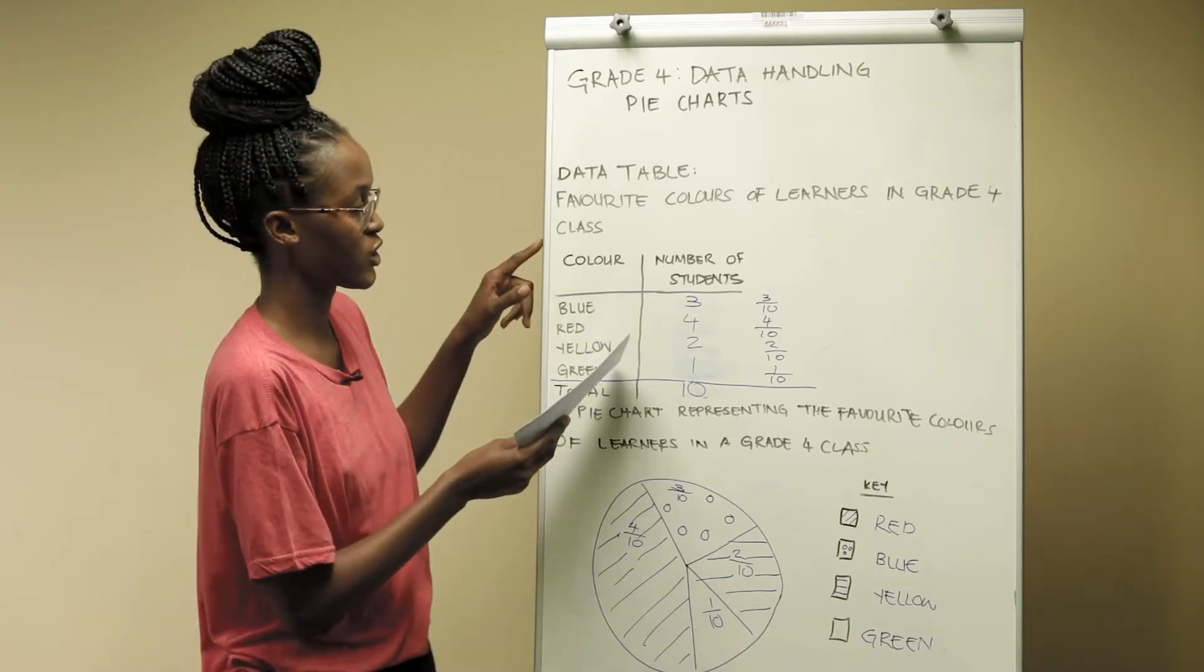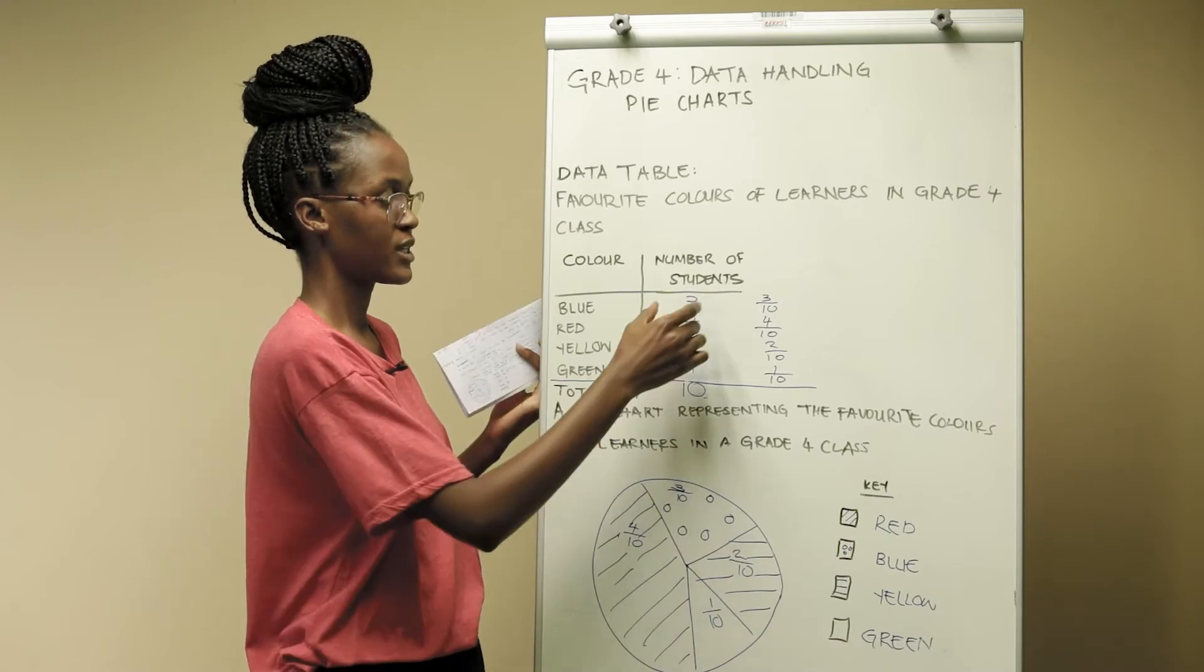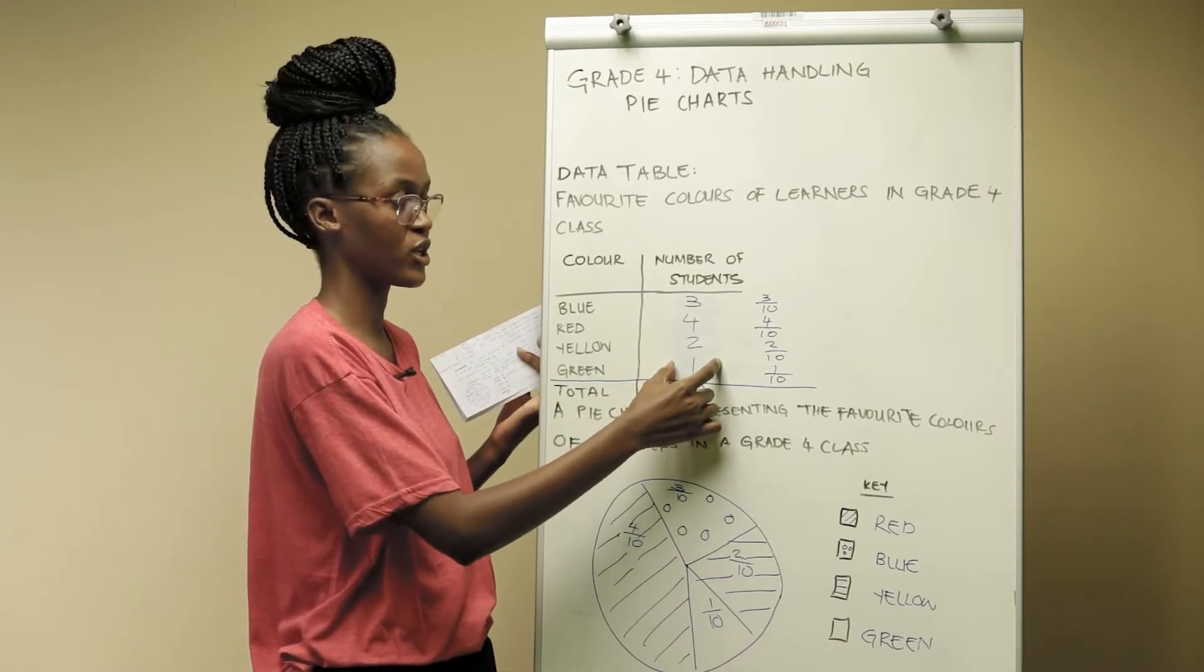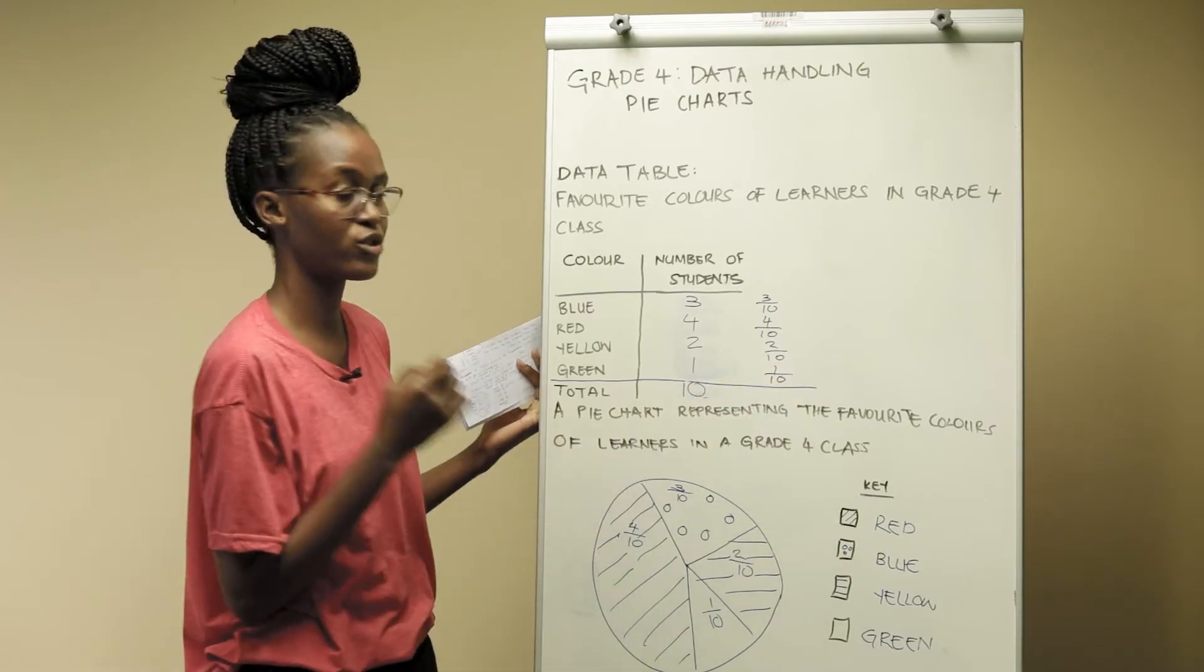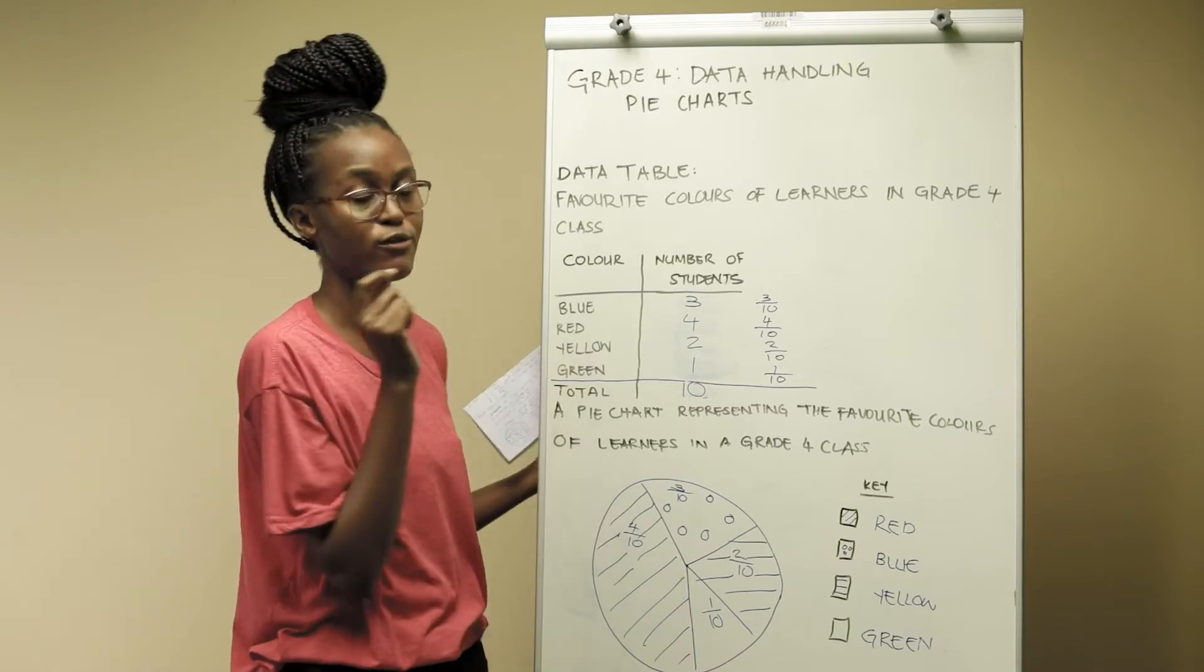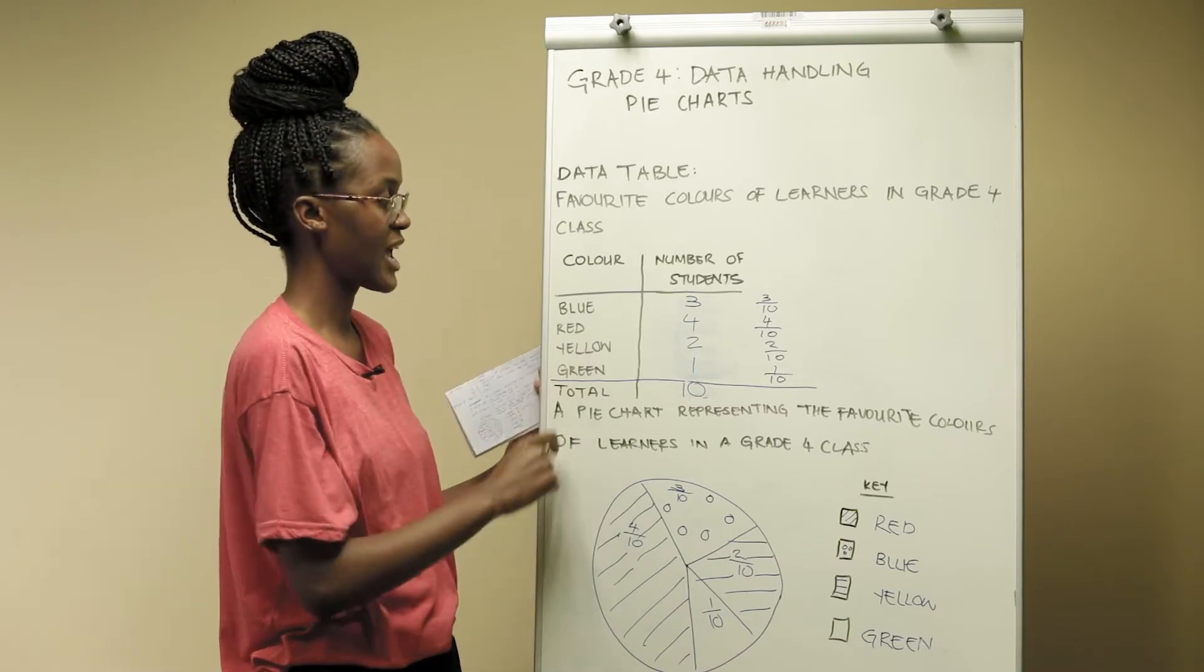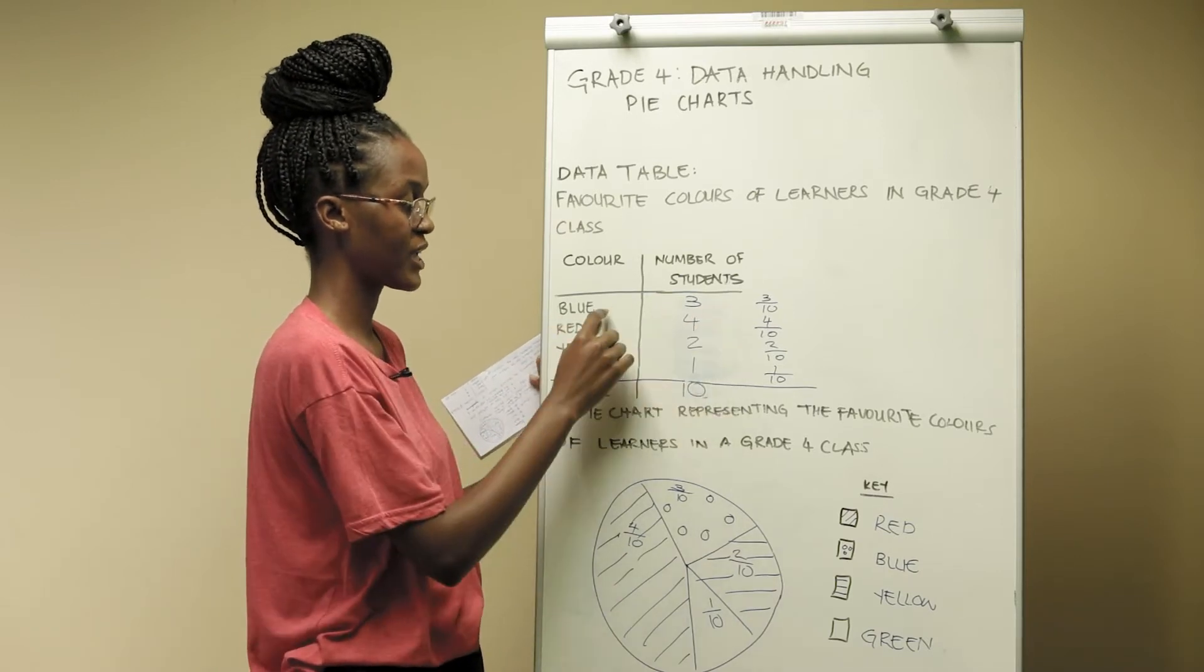It is also important to make sure that the learners are able to take the represented information and put it in fraction form. For example, you notice in this case we have the favourite colours of learners in the grade 4 class and we have indicated how many learners prefer each colour.